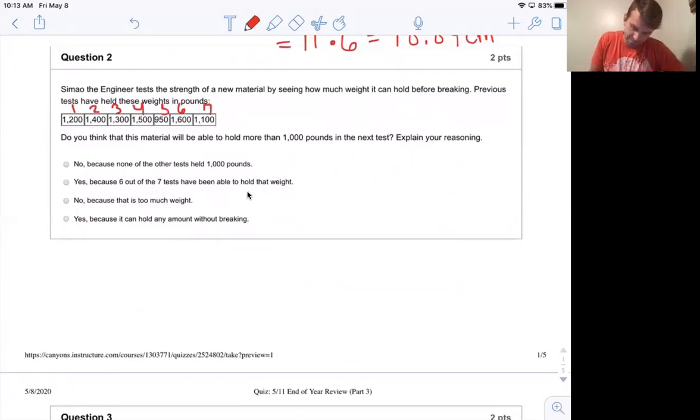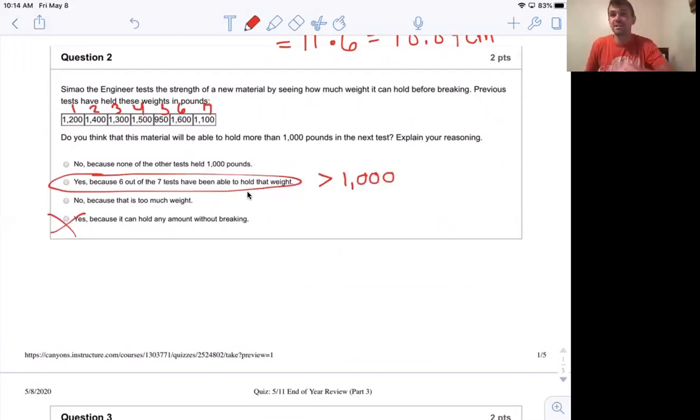Do you think that this material will be able to hold more than a thousand pounds in the next test? Explain your reasoning. So our answer is going to be yes. But why is it yes? It is because six out of those seven tests have been more than a thousand. So you know that if you try something out seven times and it works six out of those seven times, it's probably going to work the next time too. Just using common sense and logic. The other answers don't work on this one. This one says yes because it can hold any amount without breaking. That's obviously false because we already know that it did break after these seven experiments.